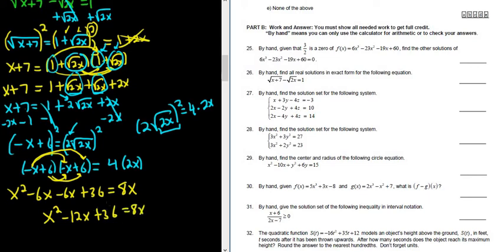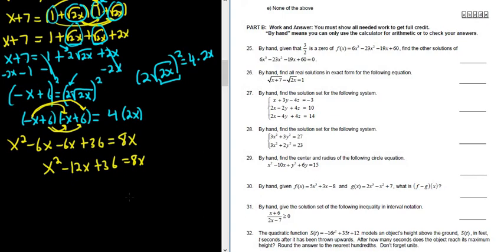Now we have a quadratic equation, so we will set it equal to 0 and factor it. So subtract 8x from both sides, minus 8x, minus 8x. These cancel, so we get x squared minus 20x plus 36, and that's all equal to 0.